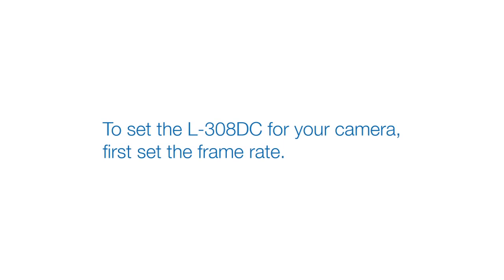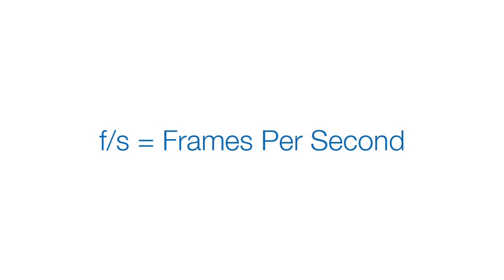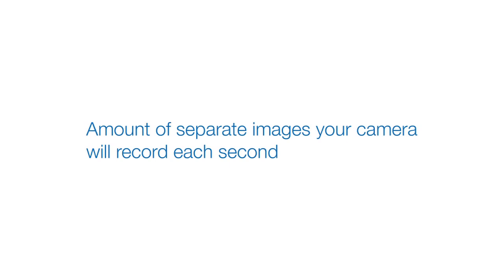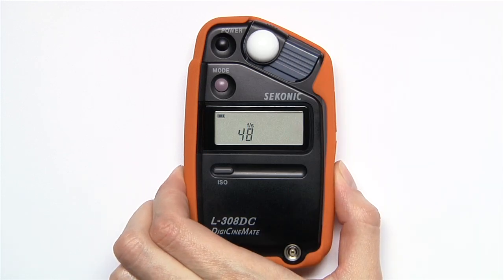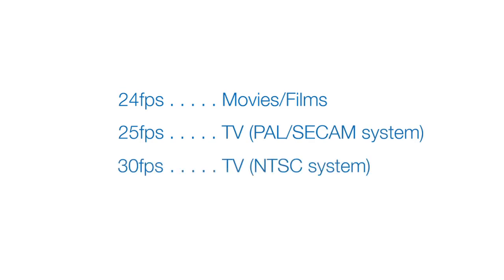To set the L308DC for your camera, first set the frame rate that the camera will be using. To set the frame rate, press mode to select FS. FS stands for frames per second — that's how many separate images your camera will record each second it is running. Press the up or down button to set the desired frame rate. 24 frames per second is a standard rate for movies, while 25 and 30 frames per second are used for motion captured for TV viewing.